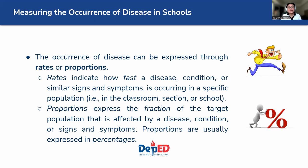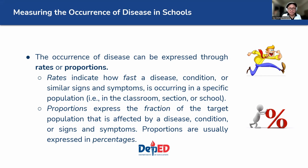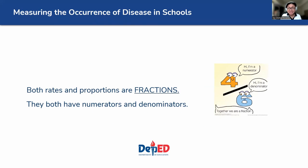The occurrence of disease can be expressed through rates or proportions. Rates indicate how fast a disease, condition, or signs and symptoms is occurring in a specific population — which can be a section, a grade, or a school. Proportion, or fraction, expresses the fraction of the target population that is affected by a disease, condition, or specific signs and symptoms. Proportions are usually expressed as percentages when multiplied by 100. Both rates and proportions are fractions, meaning they have a numerator and a denominator.